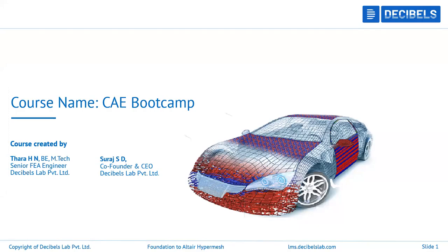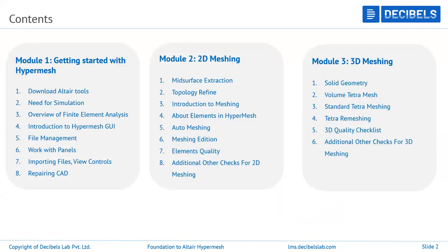Hello all. Welcome to CAE Bootcamp. I'm Tara, working as a senior FEA engineer at Desi Balsa. Today we are in Module 2, that is 2D meshing. Earlier, in Module 1, we discussed what is the need of finite element analysis and basic operations with HyperMesh. In continuation to that, in Module 2, we are going to discuss about meshing - what is meshing, why it is required, and what is the necessity of extracting the mid-surface.